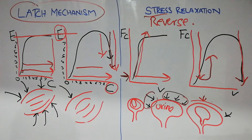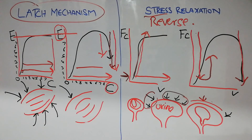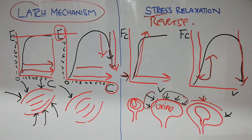So these are two phenomena related with the smooth muscle: one is the latch mechanism and the other is stress relaxation and reverse stress relaxation. In the latch mechanism, after contraction of the smooth muscles, the amount of excitation and energy needed for that contraction decreases while contraction remains the same. In stress relaxation, the amount of stretch or increase in volume remains the same but the force of contraction that initially occurred decreases with the passage of time.